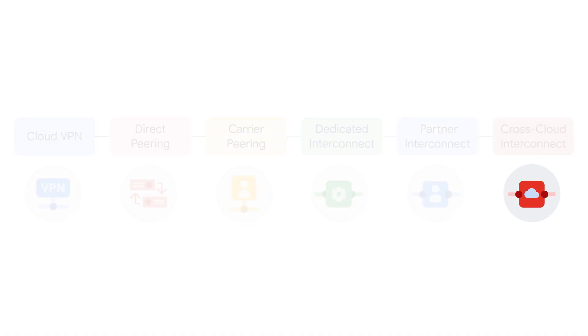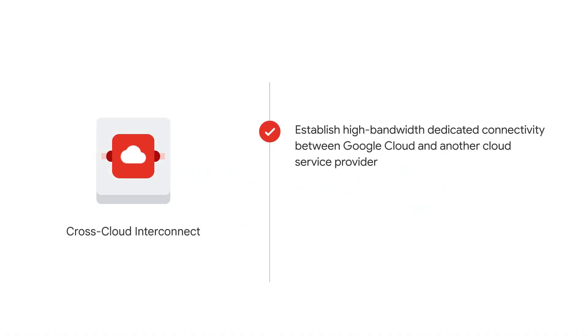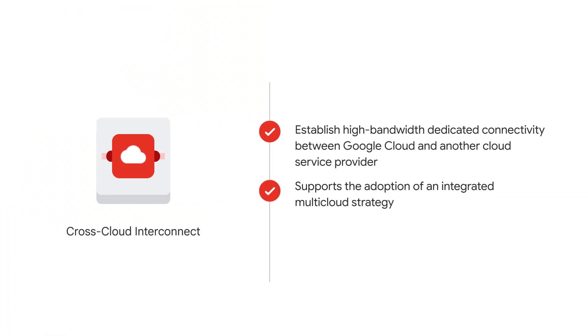The final option is Cross-Cloud Interconnect. With this option, you can establish high-bandwidth dedicated connectivity between Google Cloud and another cloud service provider. Google provisions a dedicated physical connection between the Google network and that of another cloud service provider. You can use this connection to peer your Google Virtual Private Cloud network with your network hosted by a supported cloud service provider. Cross-Cloud Interconnect supports your adoption of an integrated multi-cloud strategy and offers reduced complexity, site-to-site data transfer, and encryption. Connections are available in two sizes: 10GB per second or 100GB per second.